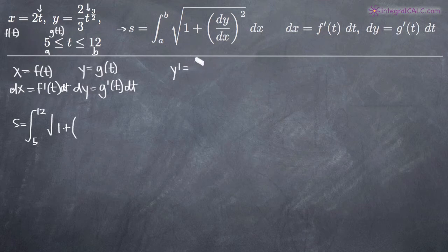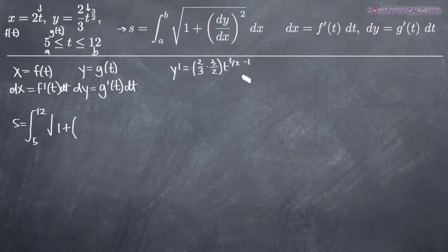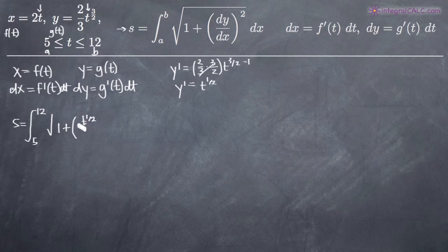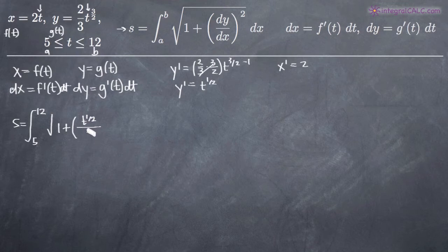So y prime, or dy, is going to be 2/3 times — we bring that exponent down — times 3/2, t to the 3/2 minus one. That's how we take a derivative. 2/3 times 3/2 is equal to 1, so that cancels, and we're just left with t to the 1/2. So dy equals t to the 1/2, and we plug that in. Then we divide by dx. To find dx, we take the derivative of our x equation: x prime, or dx, is the derivative of 2t, which is simply 2. So dx equals 2.